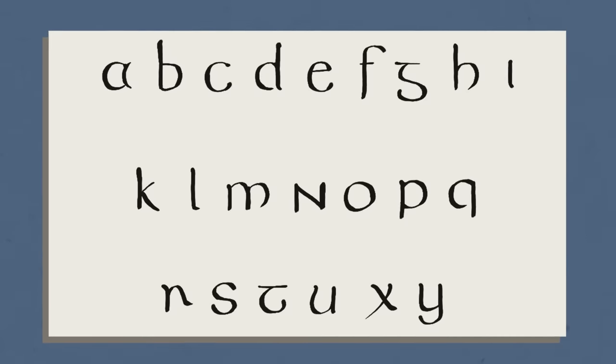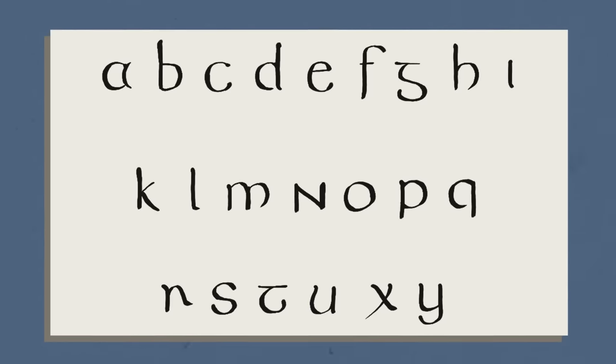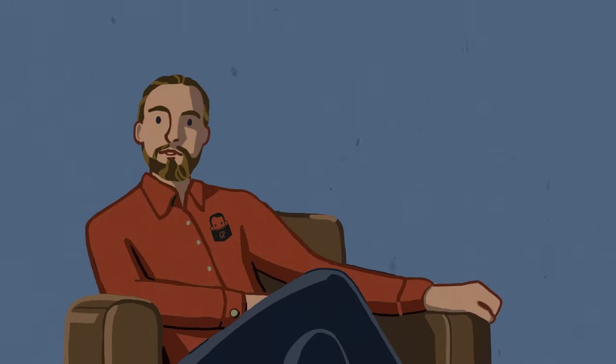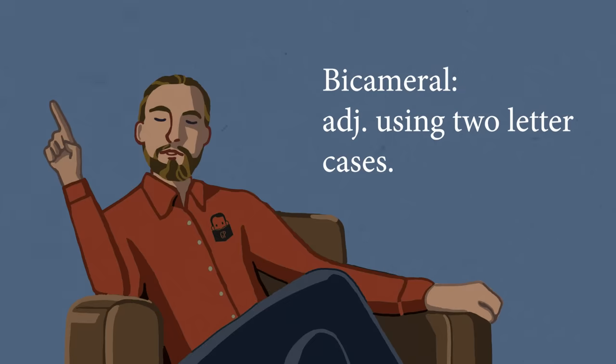Majuscule letters are defined by being of uniform height — a capital A is the same height as a B or C and so on. Minuscule letters, however, have variable heights. The lowercase Q or P has a descender, and an H has an ascender, while letters like E or A have no such protrusions. So with the half-uncials, we almost have our lowercase script. But there's an issue: half-uncial was its own script and wasn't used in tandem with capital letters. No scripts at this point were bicameral, meaning using two cases.